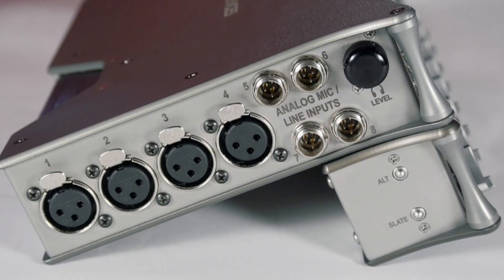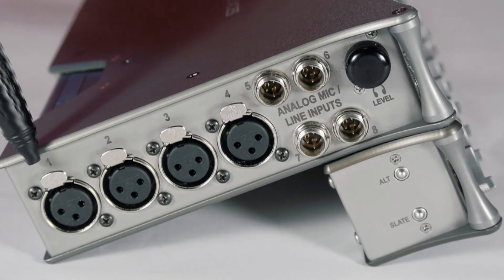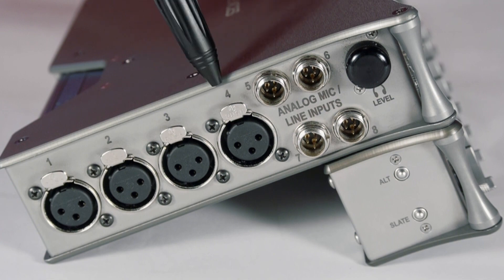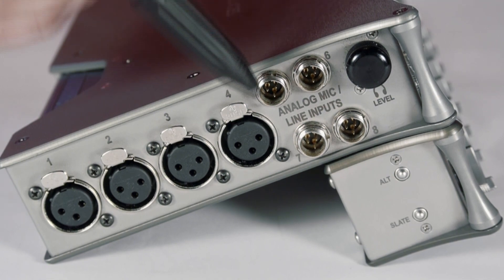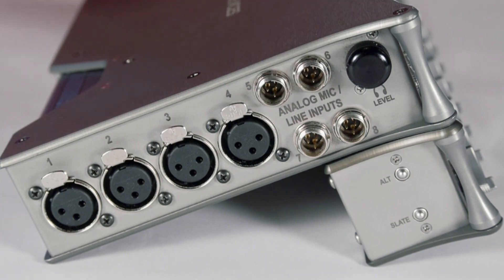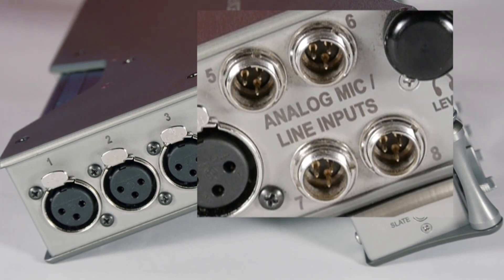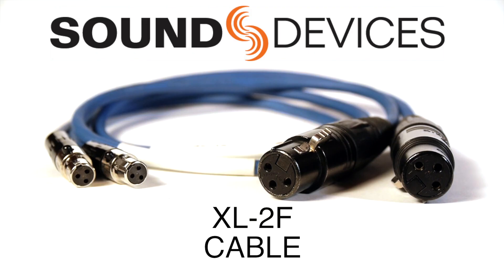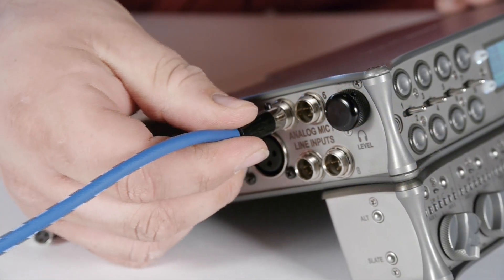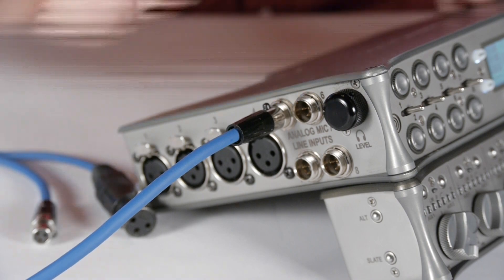Let's talk about the inputs. The micro line level inputs consist of four balanced analog XLR inputs, one through four, and four balanced analog TA3 input connectors, five through eight. For inputs five, six, seven, and eight, you would use the XL2F cables made by sound devices, which will allow you to connect all XLR cables to the recorder.